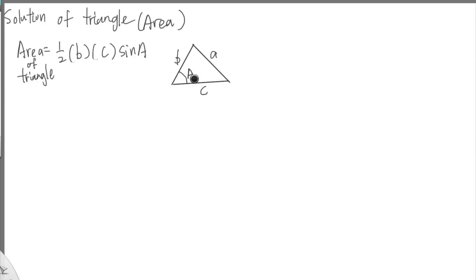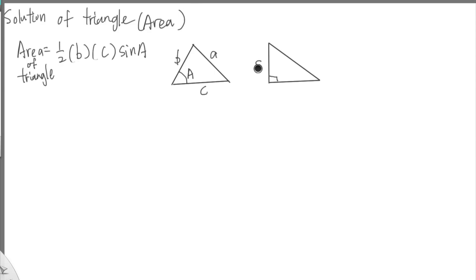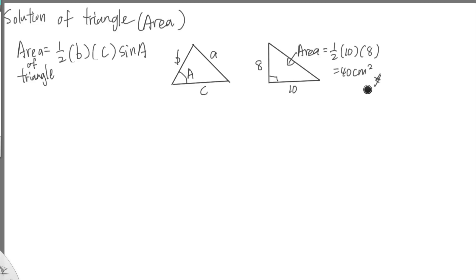When do we use this formula? If we have a right triangle with 90 degrees, we can easily find the area. For example, if this side is 10 and this side is 8, the area is simply one half times base times height — one half times 10 times 8 — which gives you 40 cm squared.